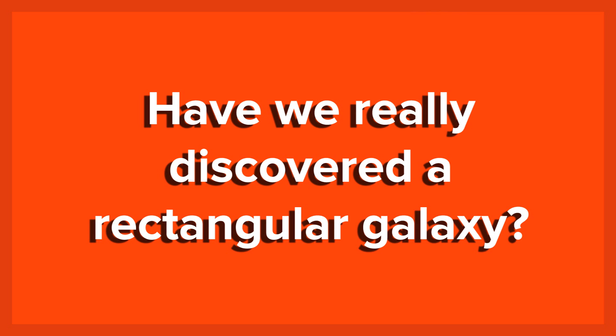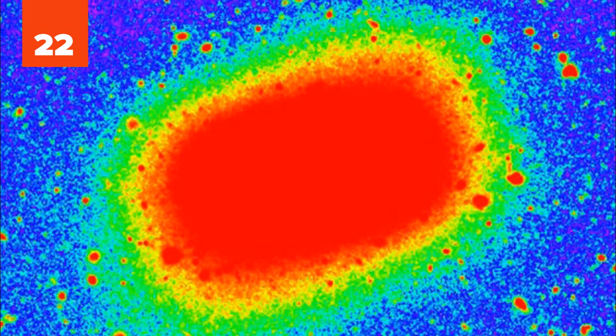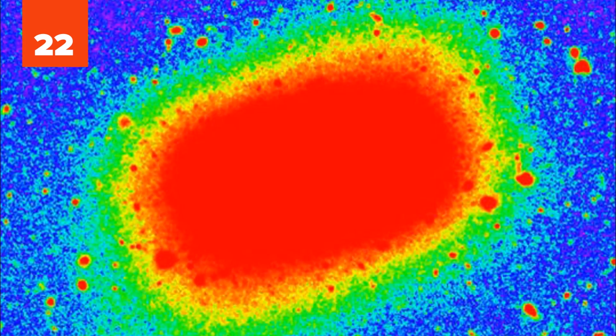Number 22: Have We Really Discovered a Rectangular Galaxy? It's being called the Emerald-Cut Galaxy, and it was recently discovered by an international team of astronomers with Swinburne University of Technology in Australia. The gem-cut galaxy was detected in a wide-field image taken with the Japanese Subaru Telescope by astrophysicist Dr. Lee Spitler.